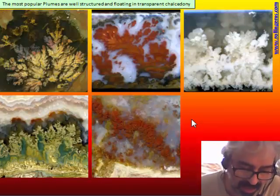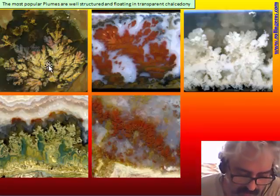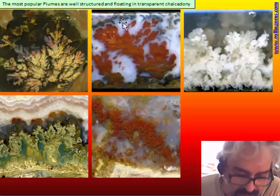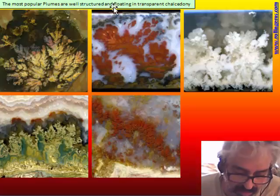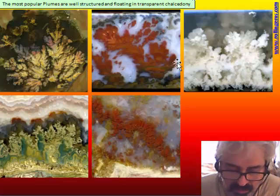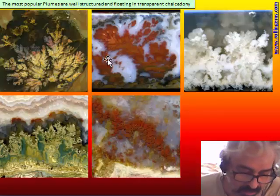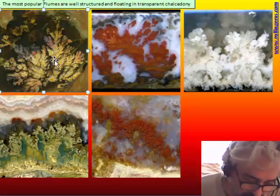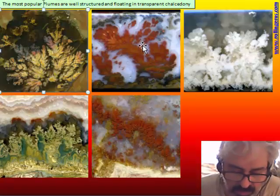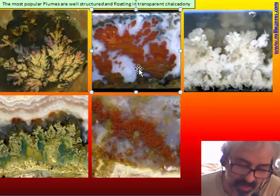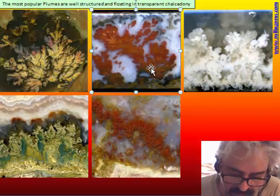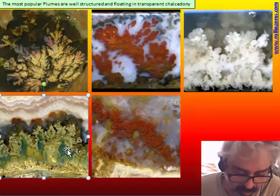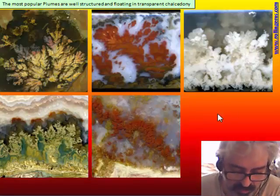The most popular plumes are well structured, with nice shapes and ideally a tree shape, floating in transparent or well-contrasting chalcedony. The most famous in absolute terms are those from Pride deposit, with many different colors inside. Also Bloody Basin, with very nice color and shape; Stinking Water; Curry plume; and the latest addition from Heidi — Prudent Man — these beautiful green plumes.